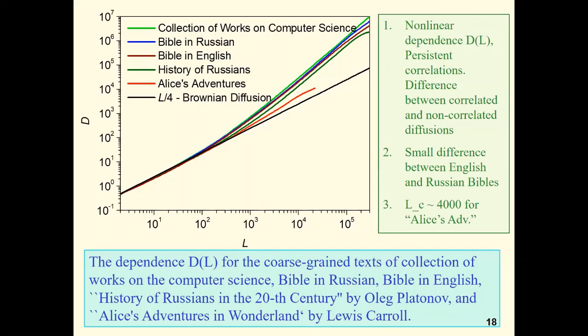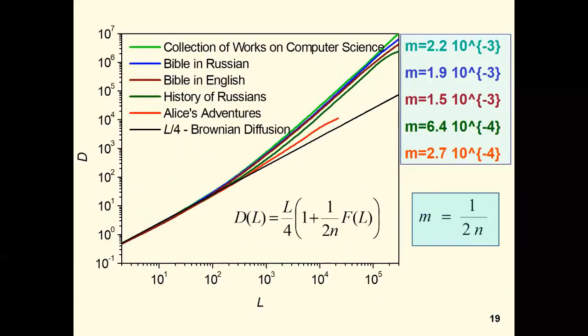It seems to me surprising that coarse graining, leading to the loss of meaning of literary text, nevertheless retains its correlation properties. The meaning of the text is killed, but the correlations associated with this meaning survive. We can classify and characterize the different texts written by different people by the parameter N, by its inverse analog M. The stronger correlations are, the larger parameter M is.